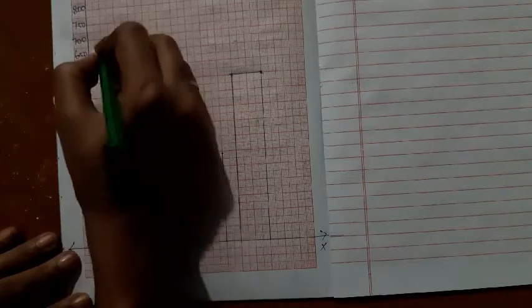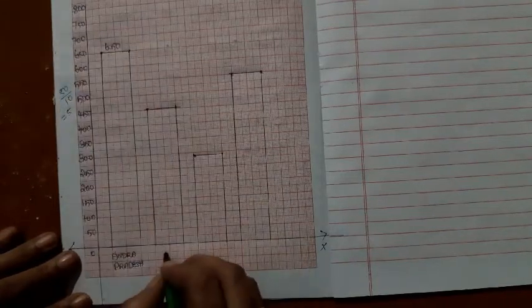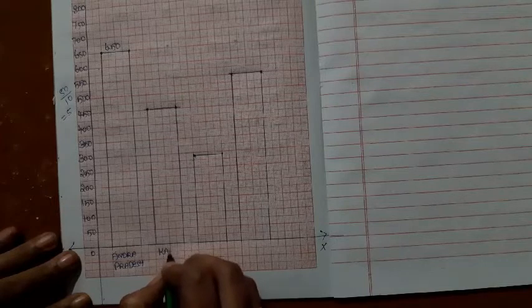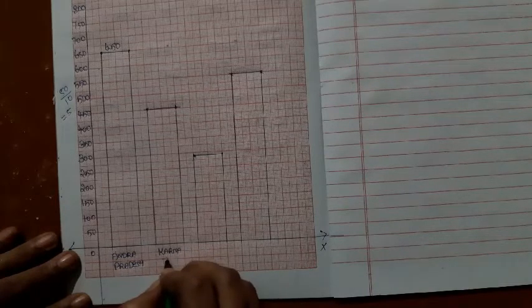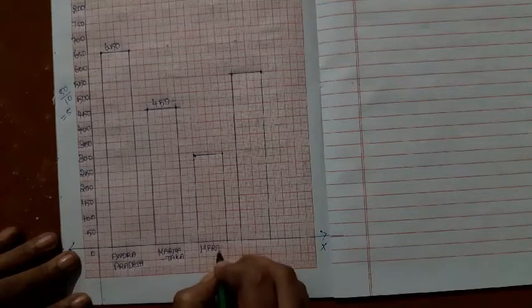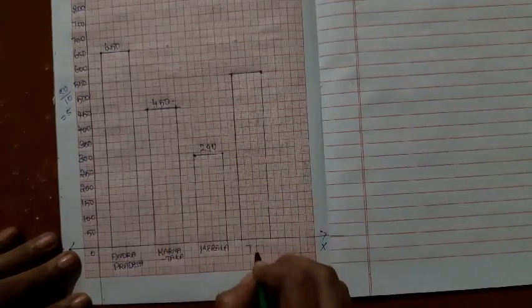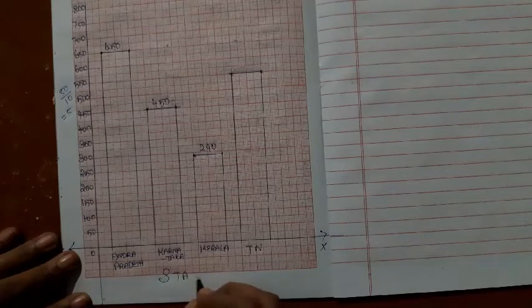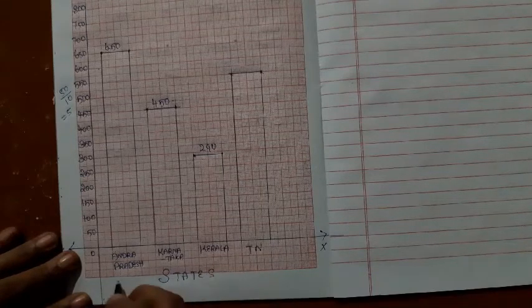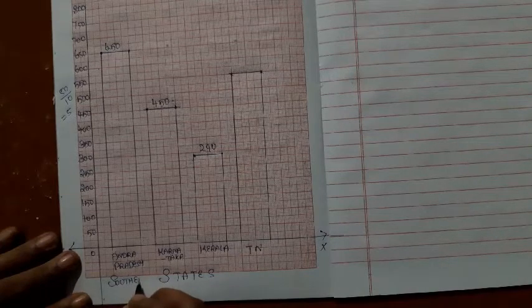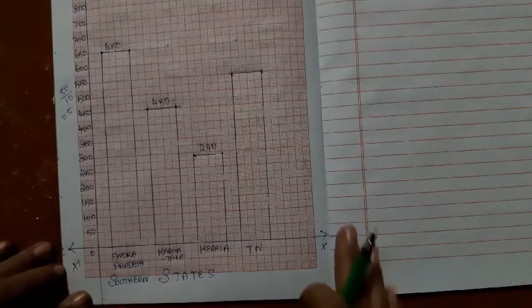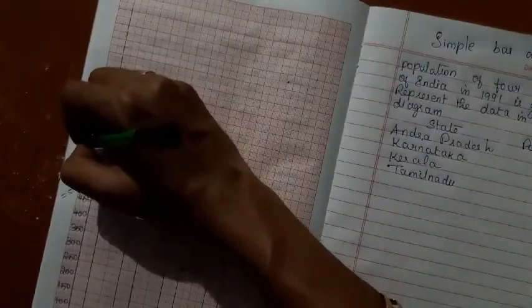So, you can write the number at the top to make reading easy. And this is Karnataka number on the top. And this is Kerala number on the top. And this is Tamil Nadu. So you have represented the states. To be more specific, southern states on x-axis. And what is there on y-axis? It is population.